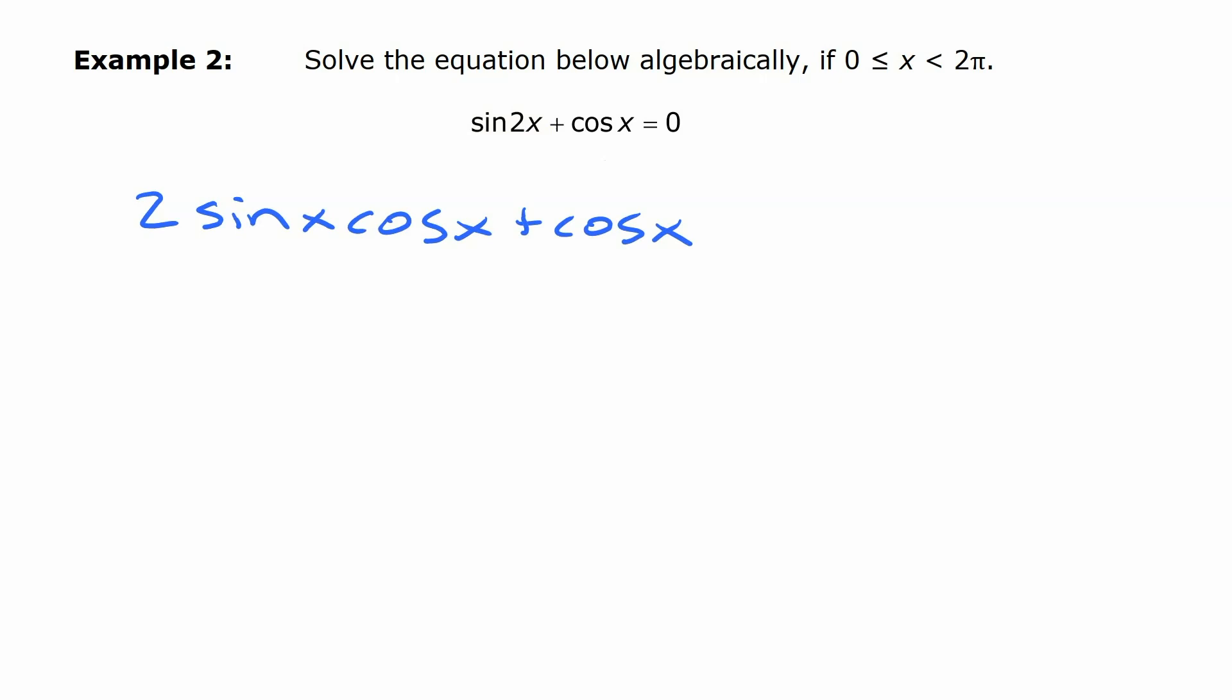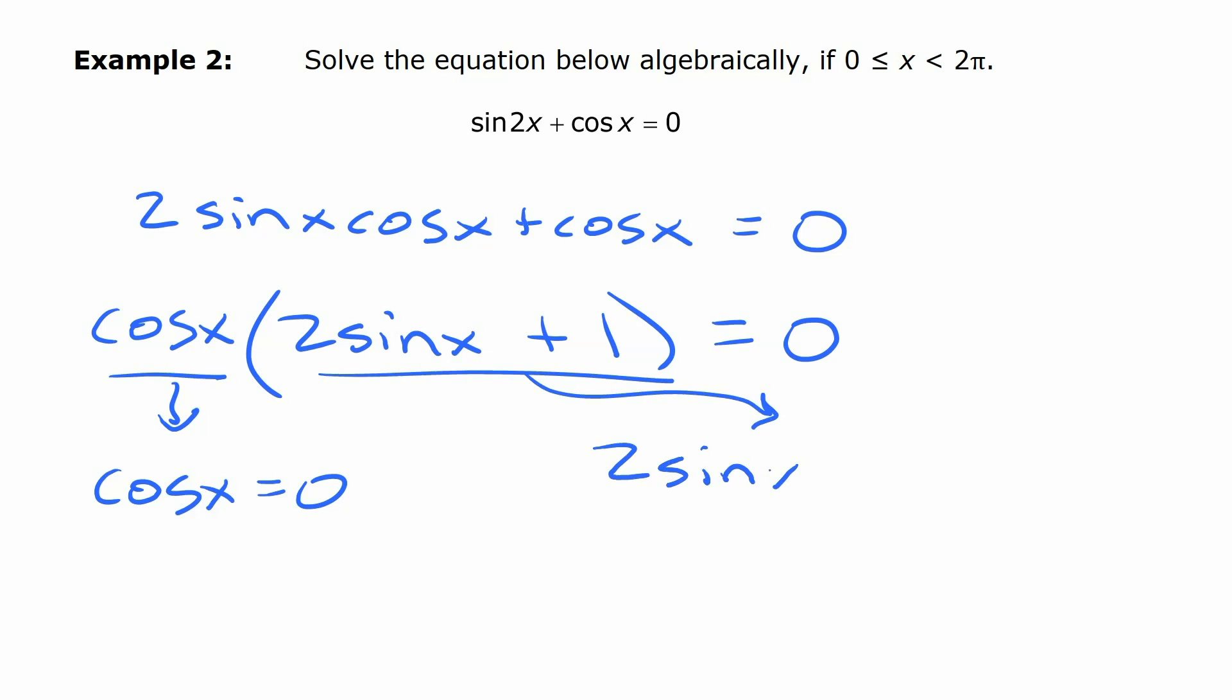Now you might say, yeah, but you didn't really achieve what you wanted to achieve because you still have two different trig functions in there. You have sine and cosine. But sometimes, even though you have two different trig functions, you can separate them in the process of factoring. And what I mean by that is, in this case, cosine is a common factor here. So we can factor out the cosine. So we can write this as cos x times (2 sine x plus 1). Now we can separate it to two smaller equations because we have this times this equals 0. So that means we can say either cos x equals 0, or 2 sine x plus 1 equals 0.